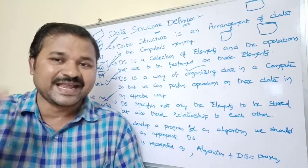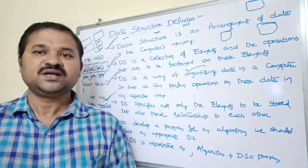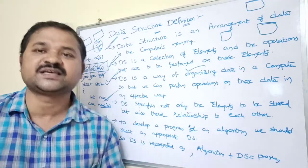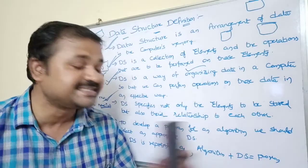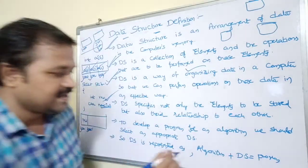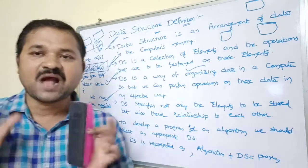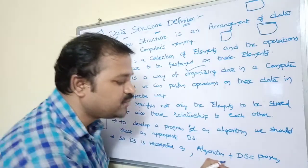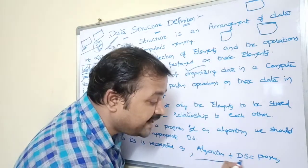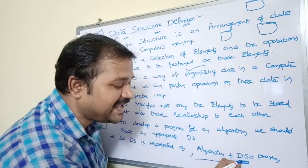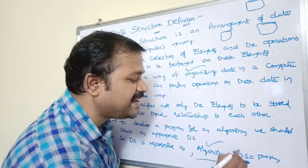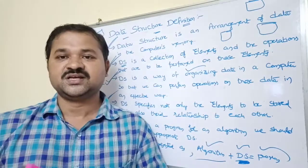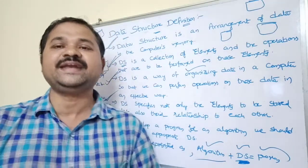Data structure is represented as: Algorithm + Data Structure = Program. Our target is to solve a problem — first we write the algorithm, then select an appropriate data structure to write the program. So DS (data structure) combined with the algorithm gives us the program. That is the definition and significance of a data structure.